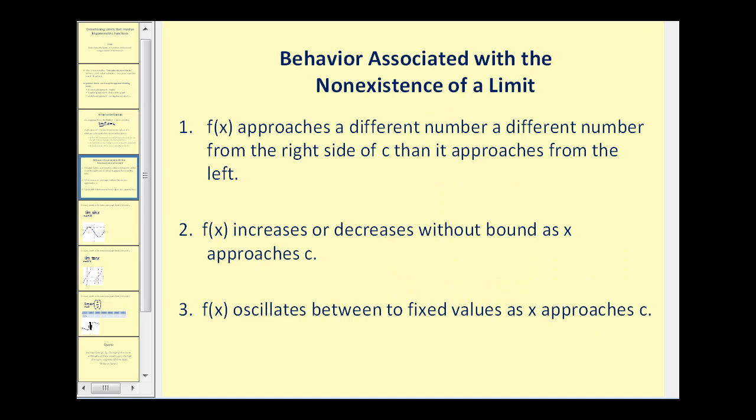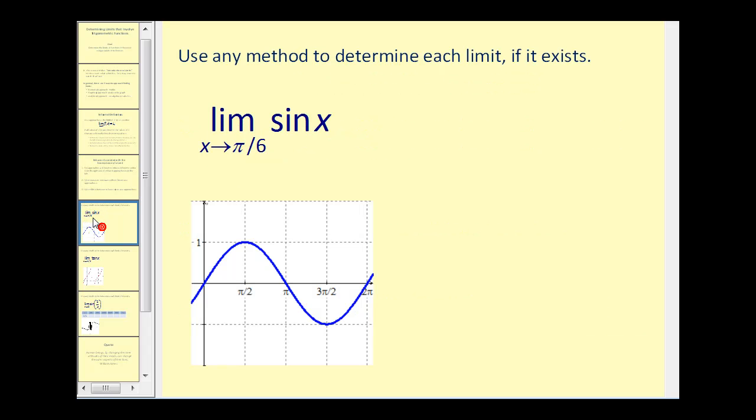There are three types of behavior for the non-existence of a limit. First, the function approaches a different number from the left and right side of c. Second, f(x) increases or decreases without bound as x approaches c. Lastly, f(x) oscillates between fixed values as x approaches c. Let's look at a few examples.